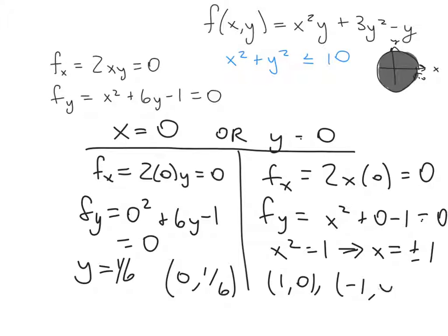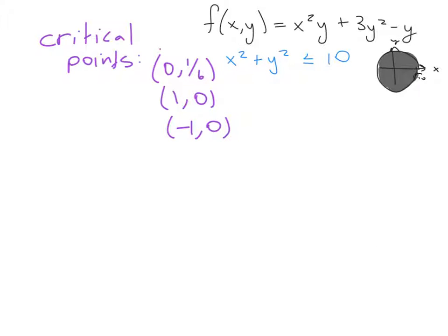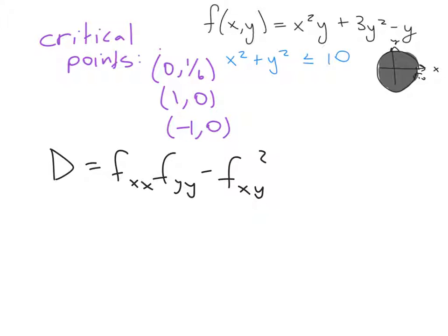This gives us critical points (1, 0) and (−1, 0). We've found three critical points in total. We can classify these using D = f_xx · f_yy − (f_xy)².